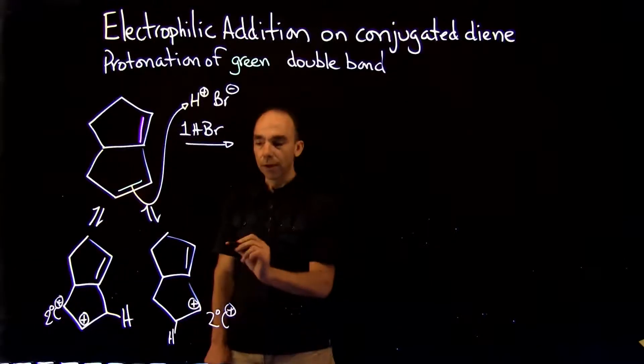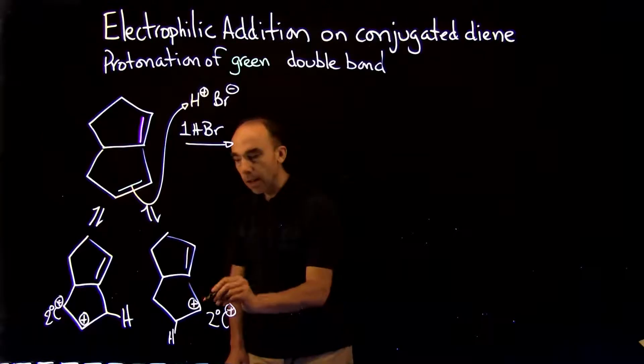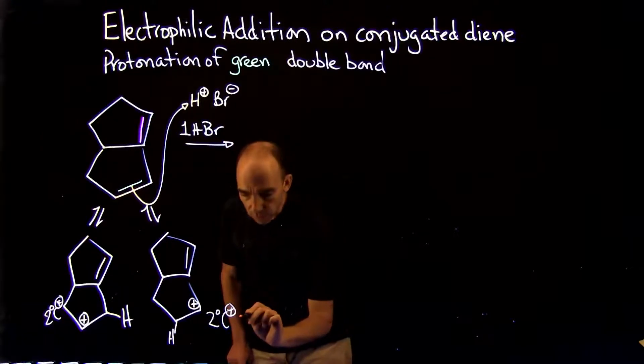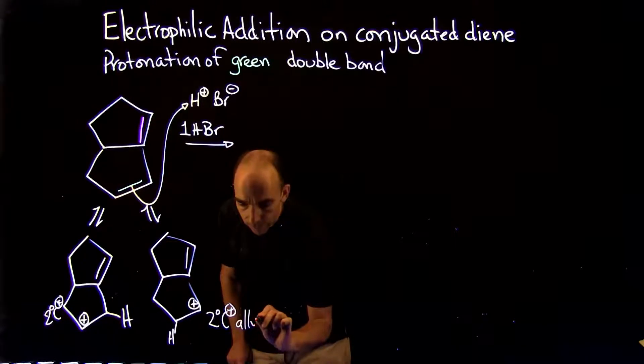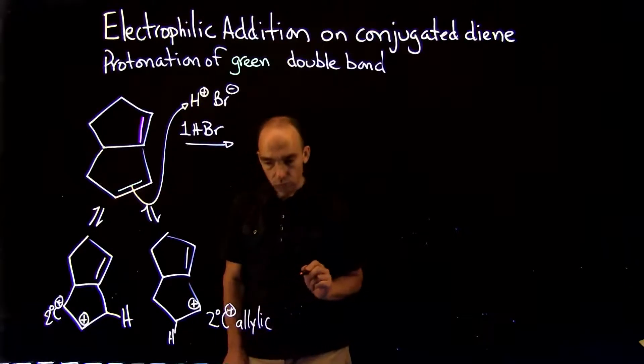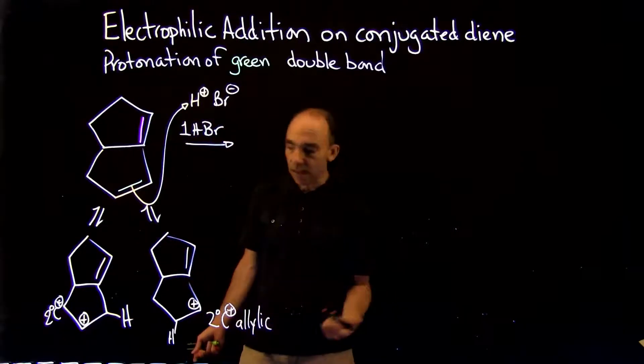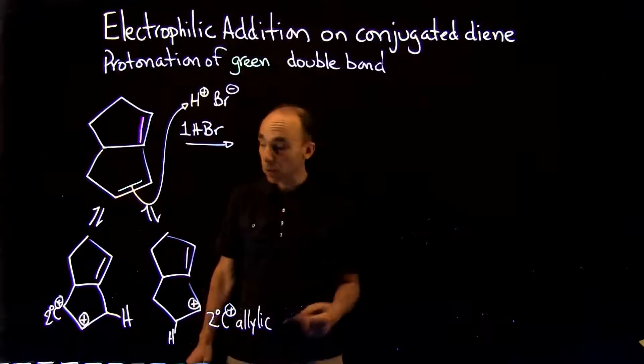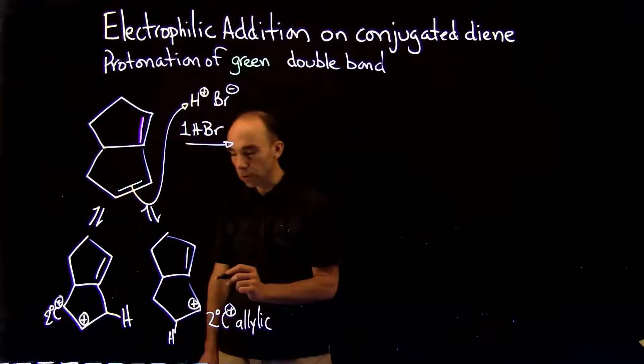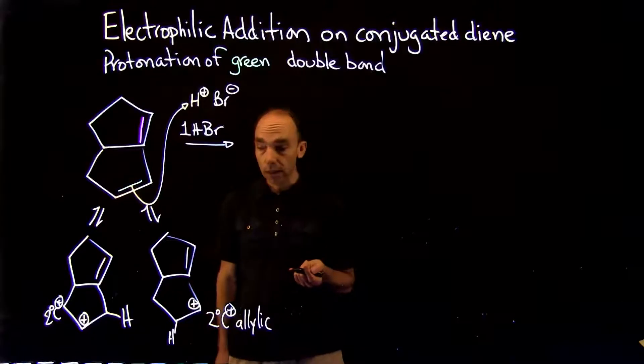Which one? The carbocation right here, being adjacent to the double bond, is referred to as an allylic carbocation. Whereas this one here is too far to resonate or to allow resonance form conjugation with the additional double bond, is therefore not allylic.